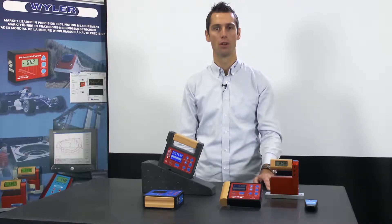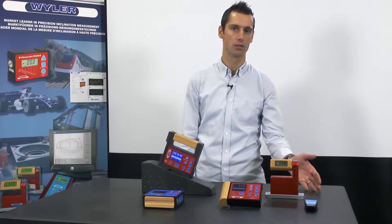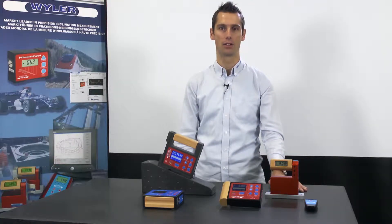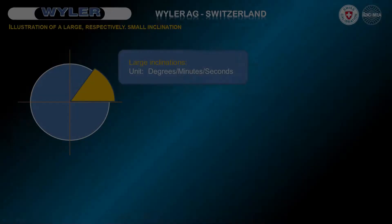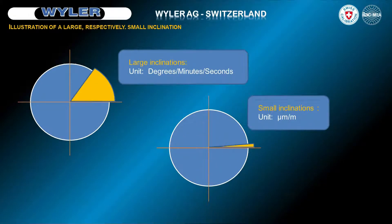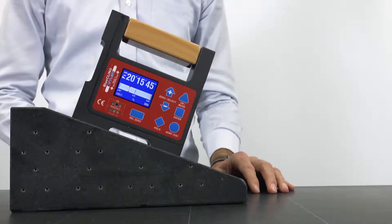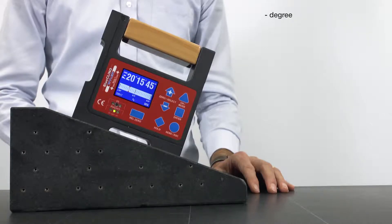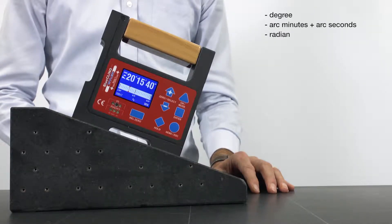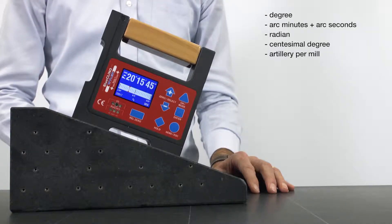We distinguish between large and small inclination angles of less than one degree — for example, when aligning a measuring table. For large inclinations, here measured by a blue cleaner, we use arcus degrees, minutes, seconds, radians, gon, and artillery per mil.